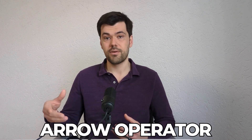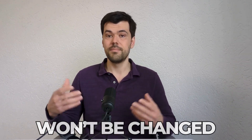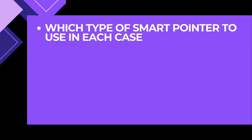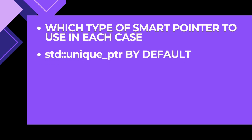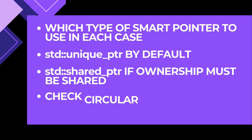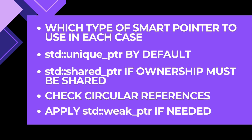Now we come to the final step: how to migrate your source code from raw pointers to smart pointers. Since smart pointers overload the arrow operator, most member function calls won't need to be changed – meaning you don't need to update much of your source code base. However, what does require changes: decide which type of smart pointer to use in each case. Use unique pointer by default and shared pointer only if you need to share ownership. Check for circular references and replace shared pointers with weak pointers if needed.